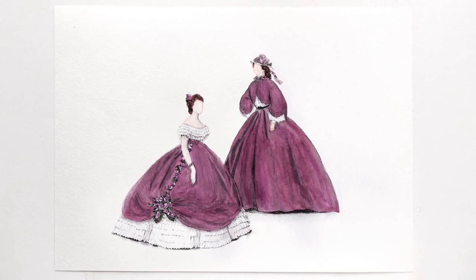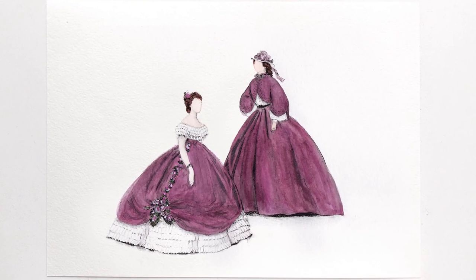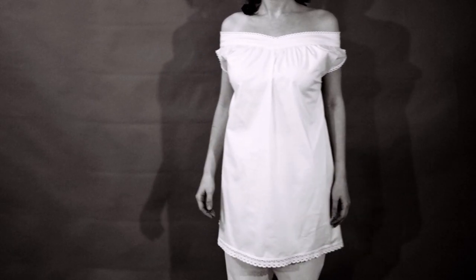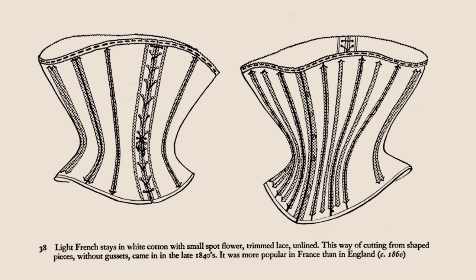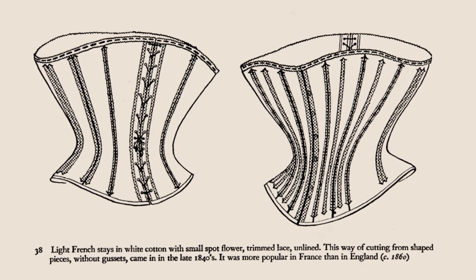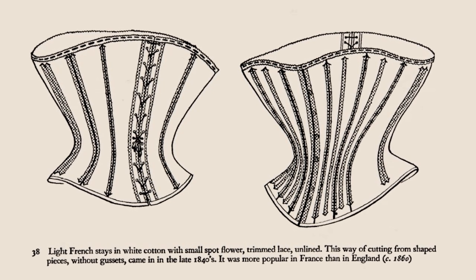Welcome to the second part of my 1860s transformation dress series. In the previous part I showed you how I made my chemise and drawers, and today you will see the process of making a corset based on a pattern from Nora Waugh Corsets and Crinolines.